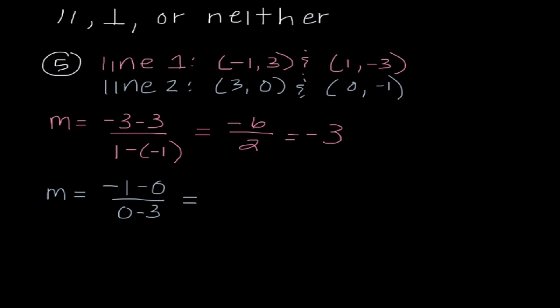I have negative 1 minus 0 over 0 minus 3. So I get negative 1 over negative 3, which is positive 1 third. So if I'm comparing these two slopes, these are opposite reciprocals. So my answer is going to be that they are perpendicular to one another. Just a reminder, if this answer had been negative 3, we would have said parallel. If it had been any other number, we would have said neither.